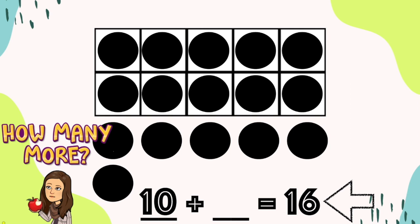How many counters did we add on? Let's count them: 1, 2, 3, 4, 5, 6. 10 plus 6 equals 16.